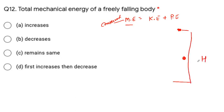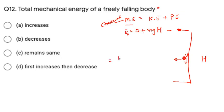The next question is: total mechanical energy of a freely falling body. Total mechanical energy is the sum of kinetic energy plus potential energy. For a body at some height, at every instant and every point, the total mechanical energy remains conserved — the sum of kinetic and potential energy always stays constant.